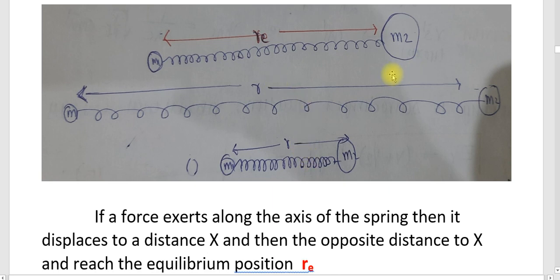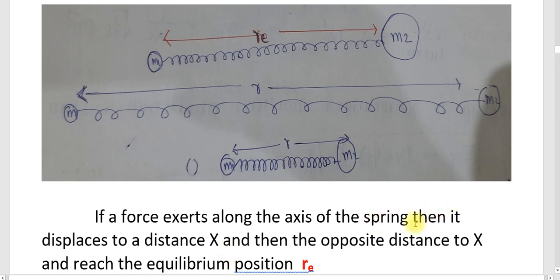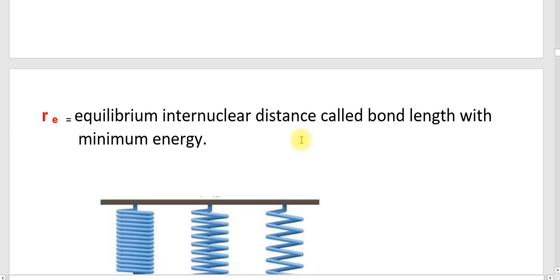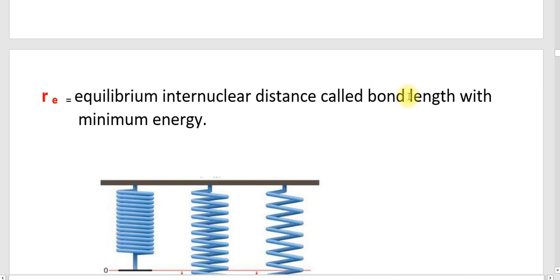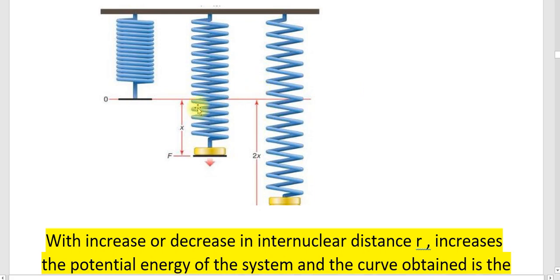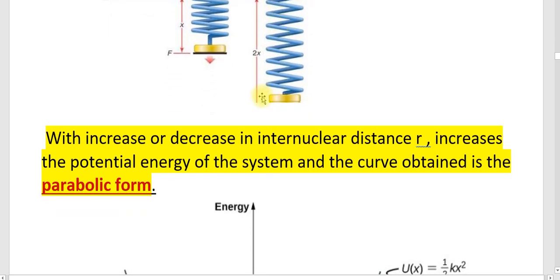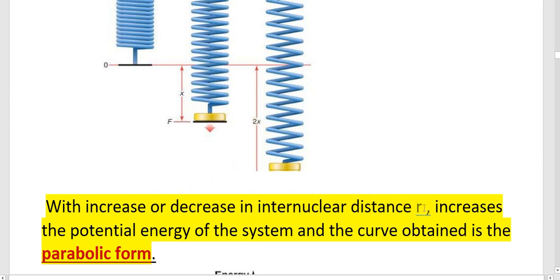If the spring is extending, the extension is about a distance x from the equilibrium position. If it is compressing, it is compressed a distance x from the equilibrium position. If a force exerts along the axis of the spring, it displaces to a distance x, then the opposite distance back to the equilibrium position R_E. R_E is the equilibrium internuclear distance — the bond length with minimum energy. With increase or decrease in the internuclear distance R from R_E, the potential energy of the system increases and the curve obtained is in parabolic form.